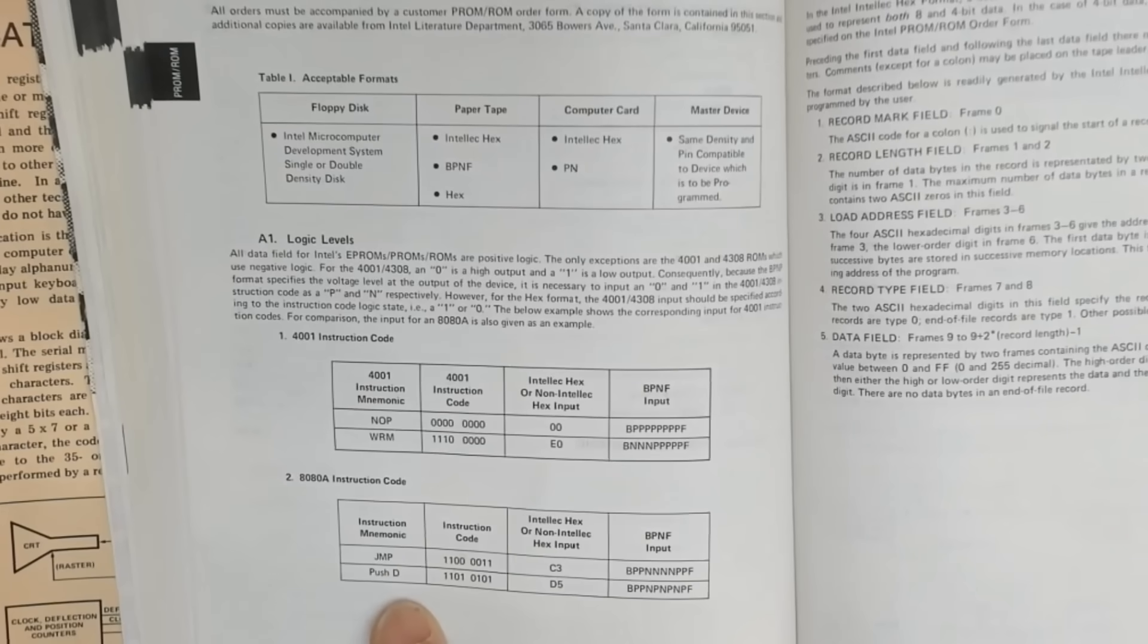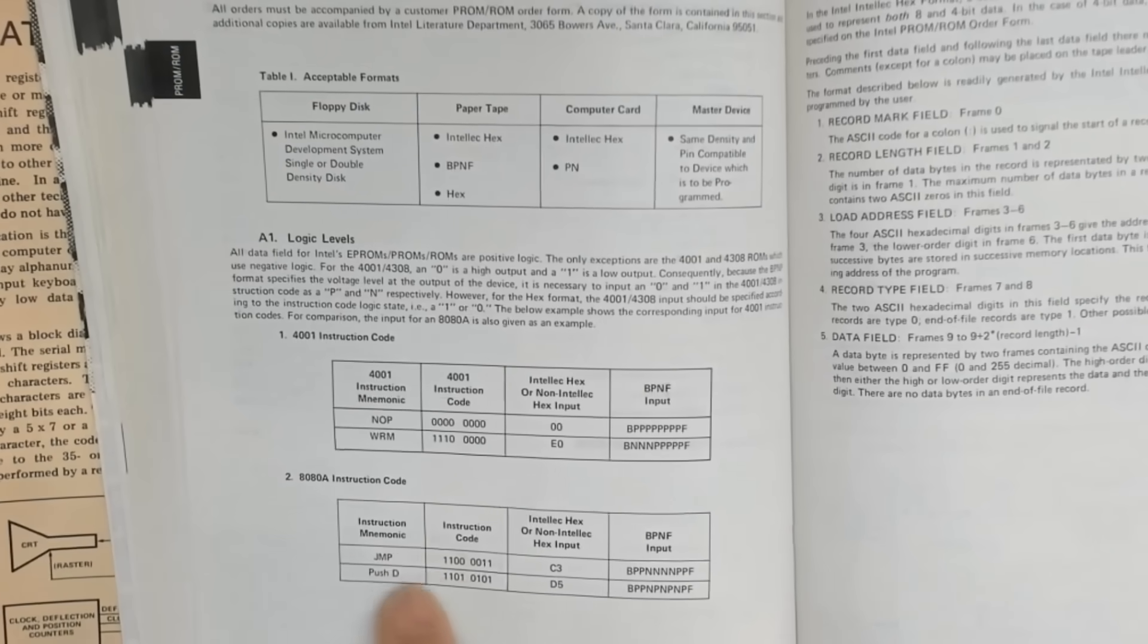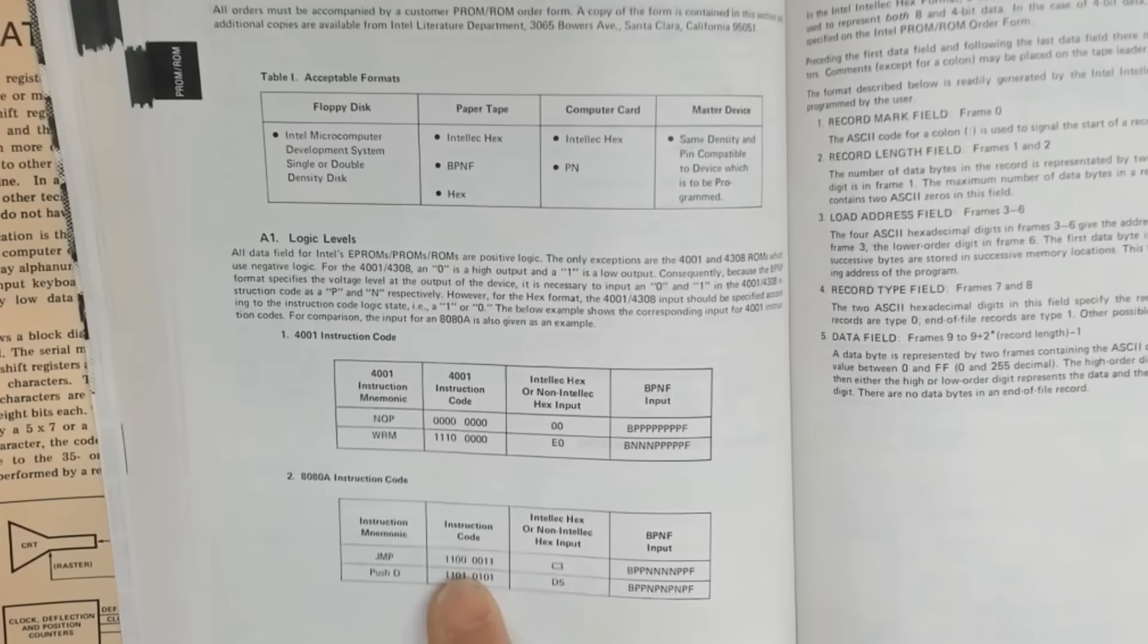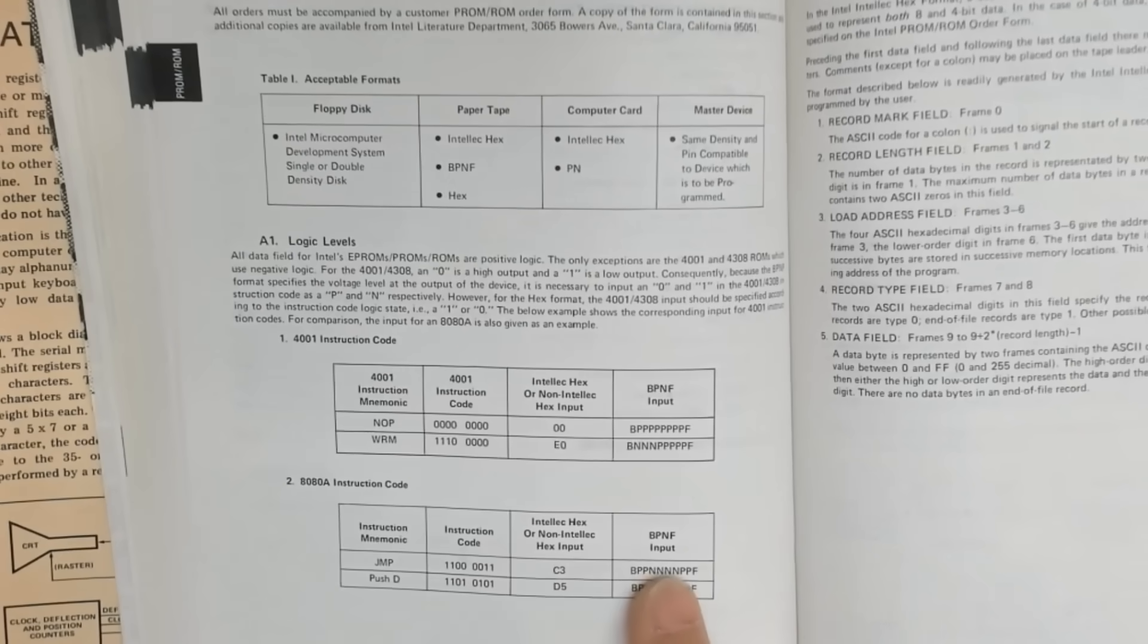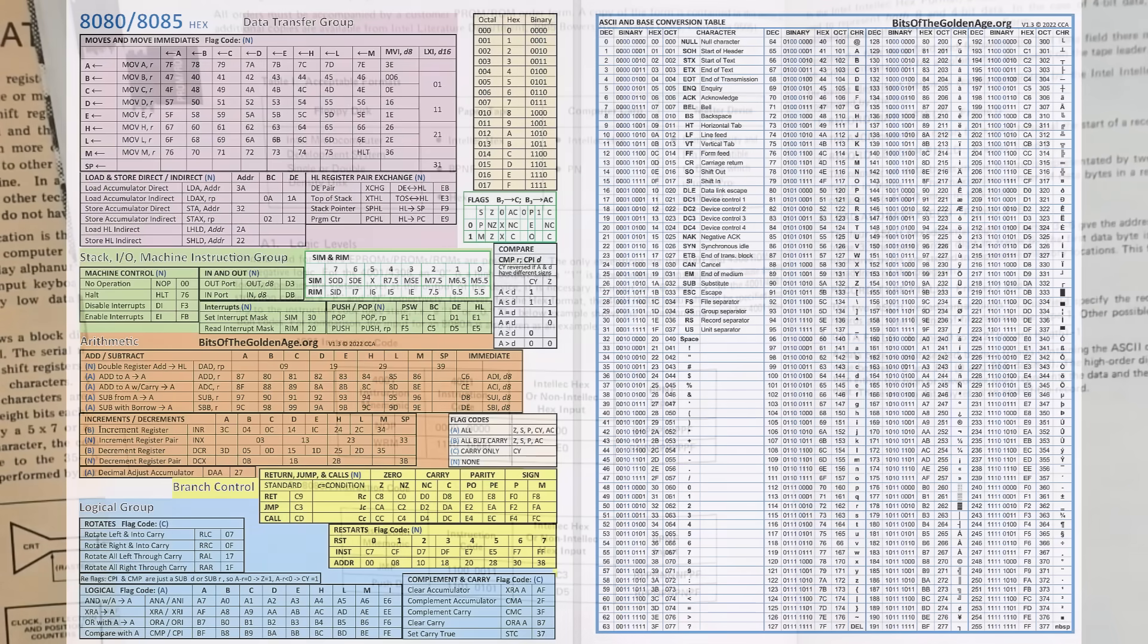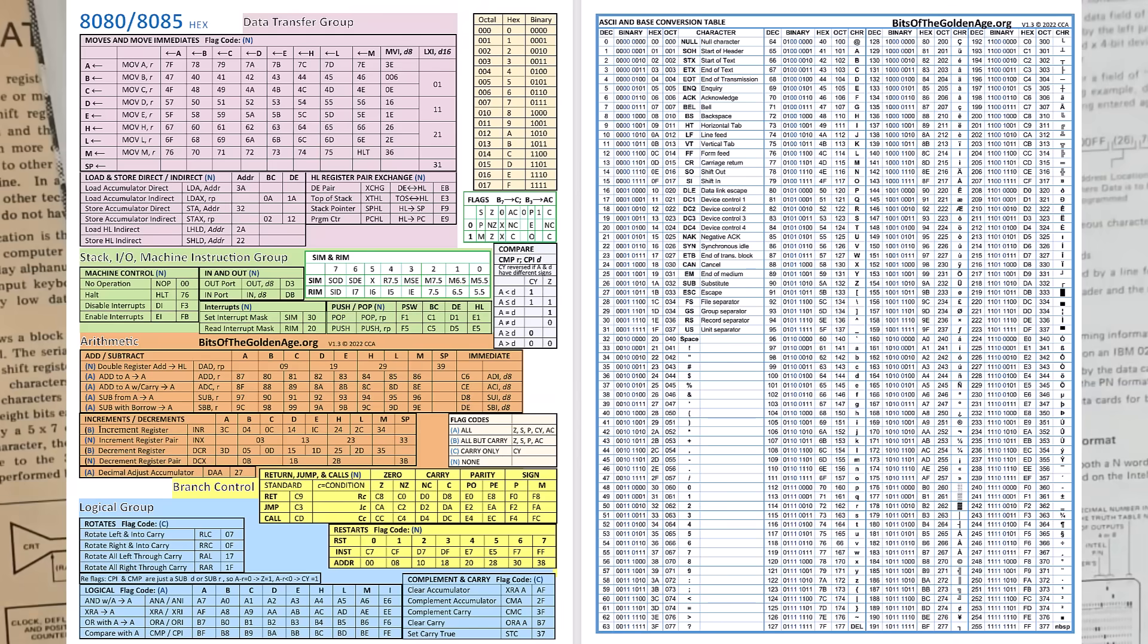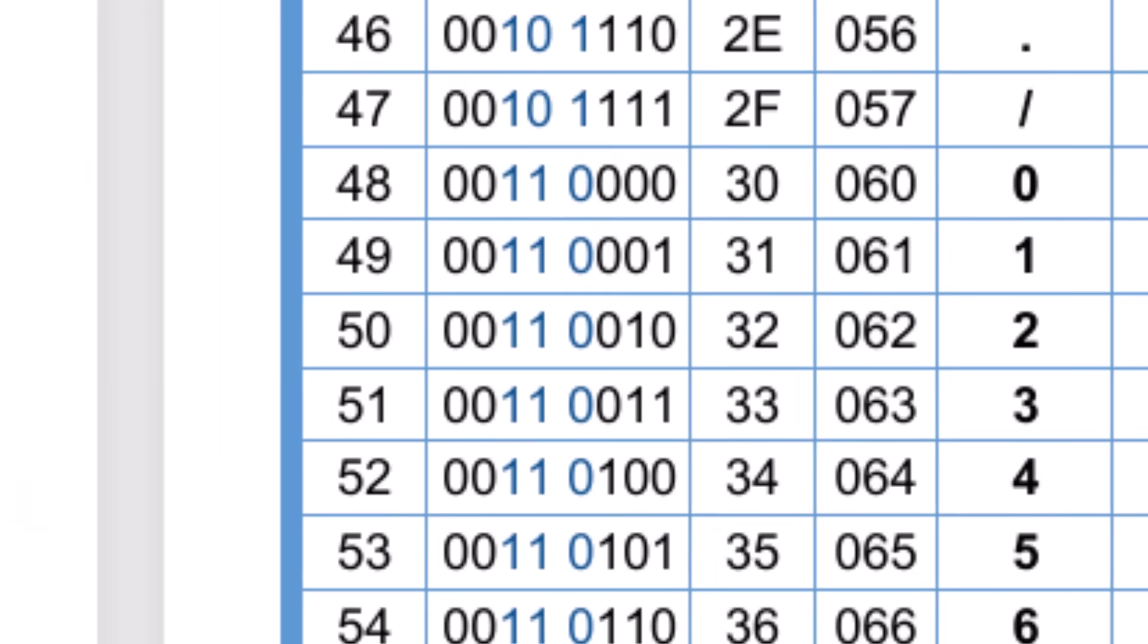And here for the 8080, if it's a 1, then it's a P, and if it's a 0, then it's an N. So the second reason that they used the P's and N's instead of 0 and 1's is that 0 and 1 are adjacent. You know, 0 is 30 in hex or 0011 0000. Well, the 1 character is just 31, meaning all the bits are the same except for the least significant bit. It's a 1 rather than 0.